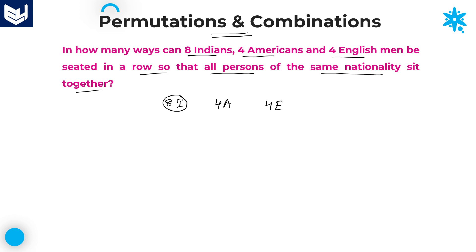It means all Indians sit together, all Americans sit together, all Englishmen sit together. So we need to take all 8 Indians as one entity, all 4 Americans as one entity, and all 4 Englishmen as one entity. First of all, these 3 different entities can be arranged in how many ways? There are 3 different single entities, and those 3 can be arranged in 3 factorial ways.